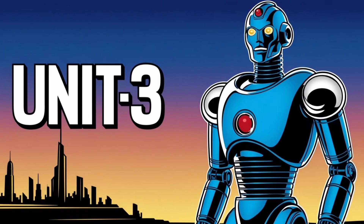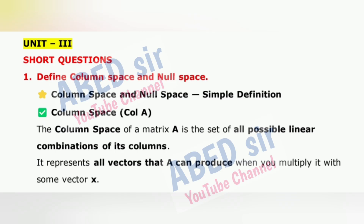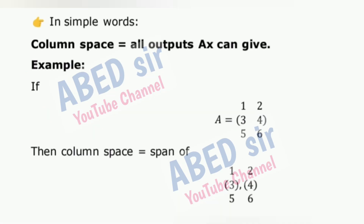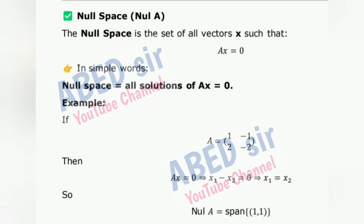Unit 3, First Important Short Question: Define Column Space and Null Space. Column Space definition — the column space of a matrix A, denoted Col(A), is the set of all possible linear combinations of its columns.